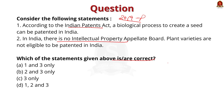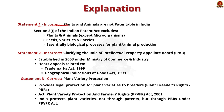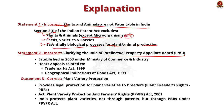Let us analyze each statement individually. Statement 1 is not correct. Article 3(j) of the Indian Patent Act states that plants, animals except microorganisms, including seed varieties and species, as well as essential biological processes for producing or propagating plants and animals, are not eligible for patents. Statement 2 is also not correct. The Intellectual Property Appellate Board was constituted by the Government of India in the Ministry of Commerce and Industry in September 2003 to hear appeals against decisions of the registrar under the Trademarks Act 1999 and Geographical Indications of Goods Act 1999.